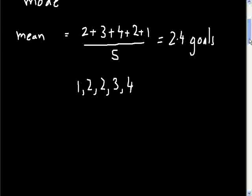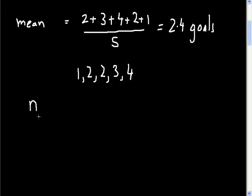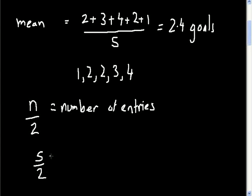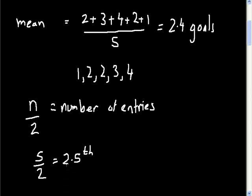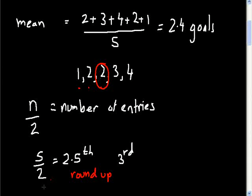This is what Edexcel specifies when working out the median: you do n divided by 2, where n is the number of entries. We have five entries, so 5 divided by 2 is 2.5. Since 2.5 is a decimal, you round it up to the third position. The third value in our ordered list is two, so two goals is the median score.